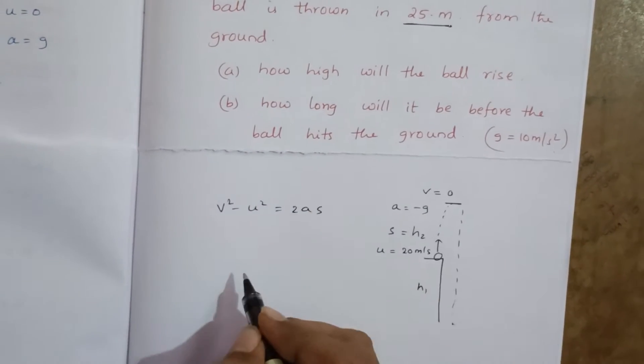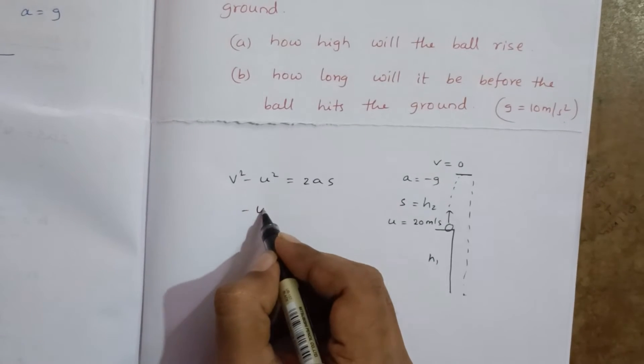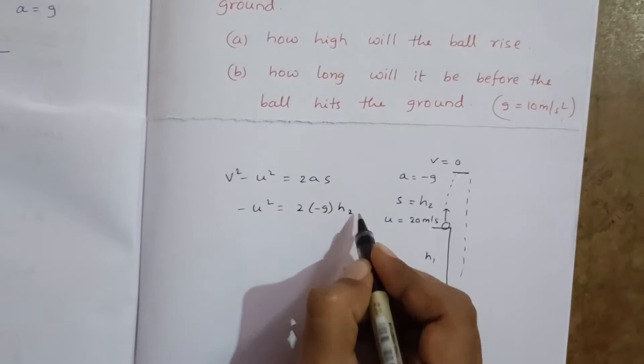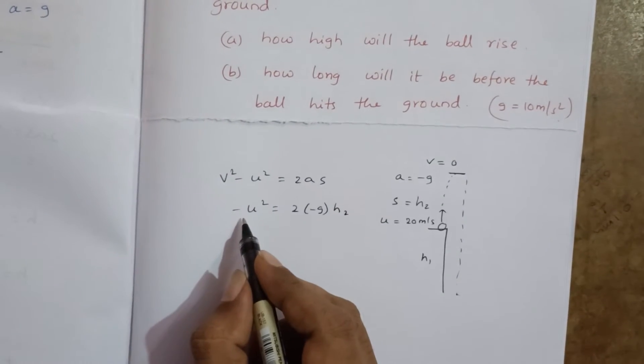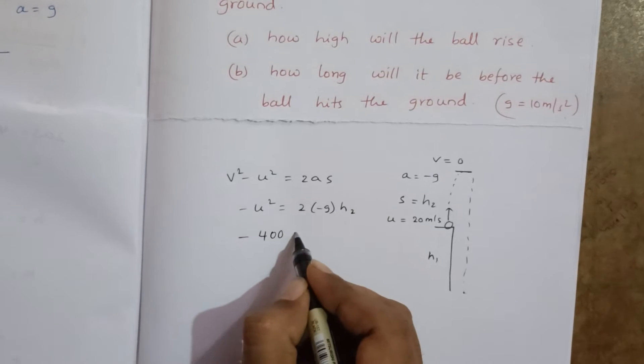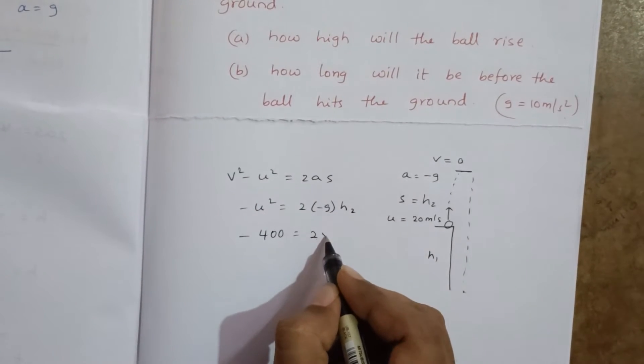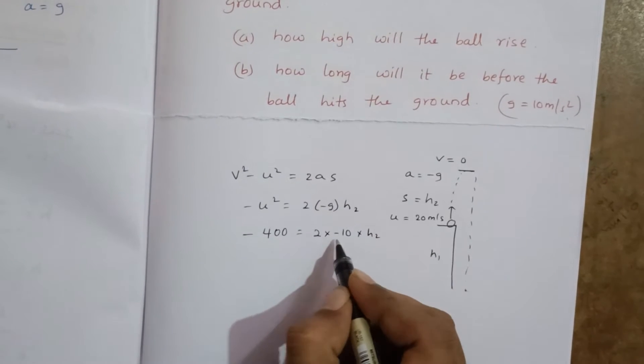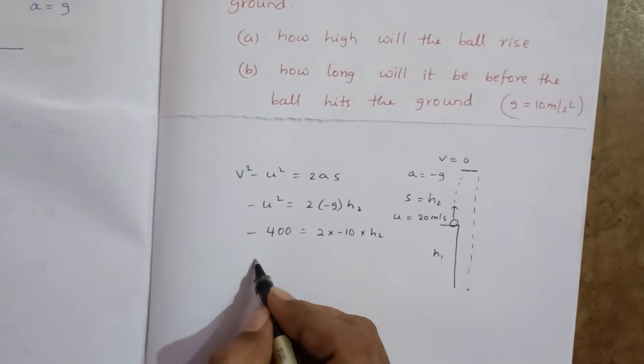So v² 0 minus u² equal to 2 into minus g into h₂. Minus u² minus 20 squared minus 400 equal to 2 into minus 10 into h₂, minus 10 into 2 minus 20.